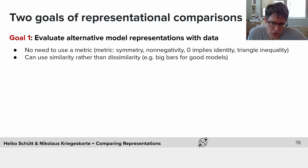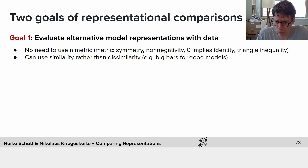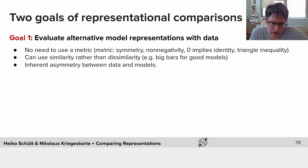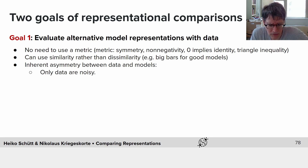When we're evaluating alternative models, we may want to use a similarity rather than a dissimilarity — for example, in a bar graph where big bars correspond to good models. There is also an inherent asymmetry between the data and the models in that only the data are noisy. Models are often deterministic and have no notion of noise, so the uncertainty comes from the noise in the data.